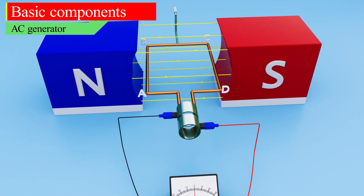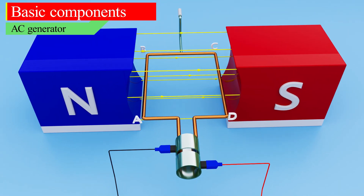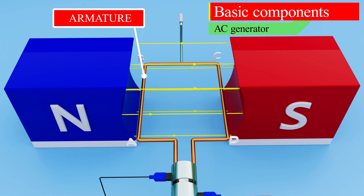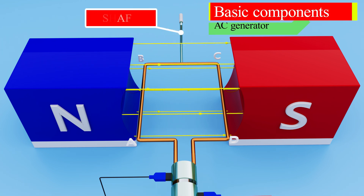Let's look at the basic components of an AC generator. The armature is the part of an AC generator which carries a current and consists of many coils of wire. The armature converts electrical power to mechanical power in the form of torque and transfers it via the shaft. The shaft is the moving part and it is connected to the armature.